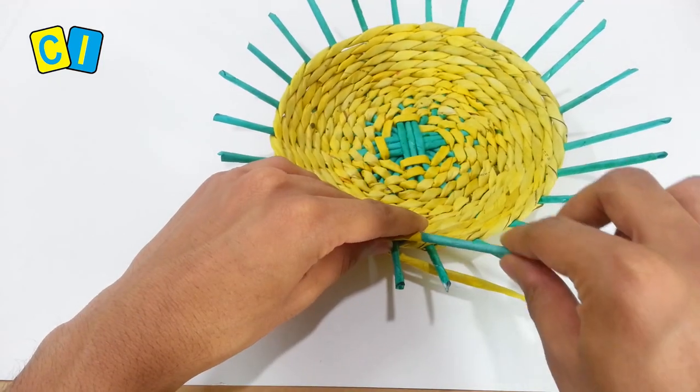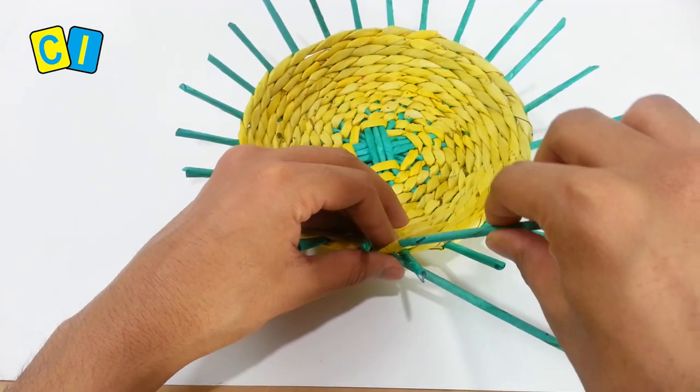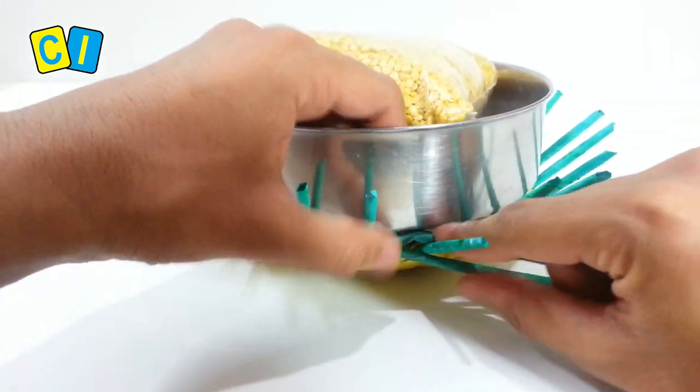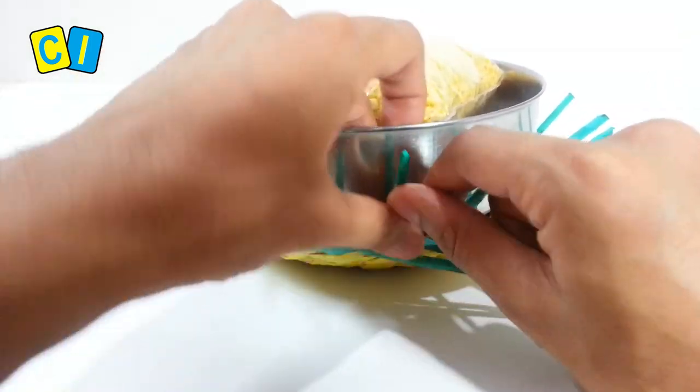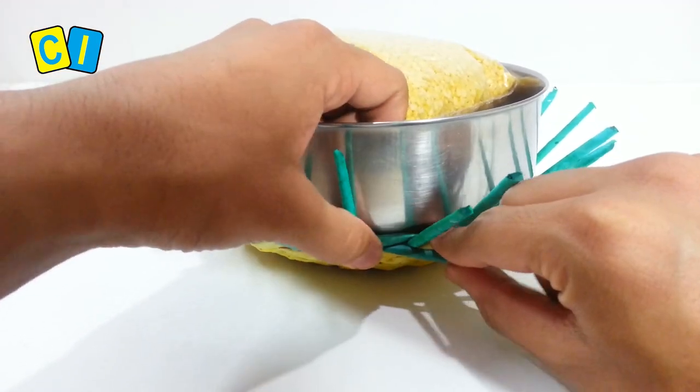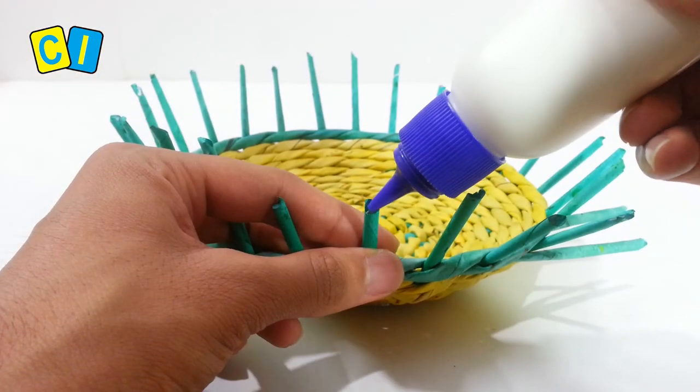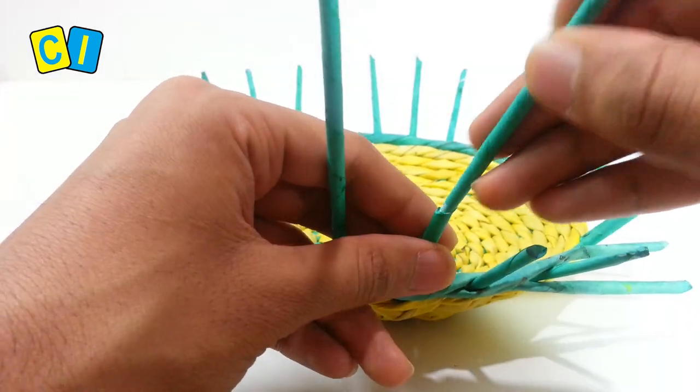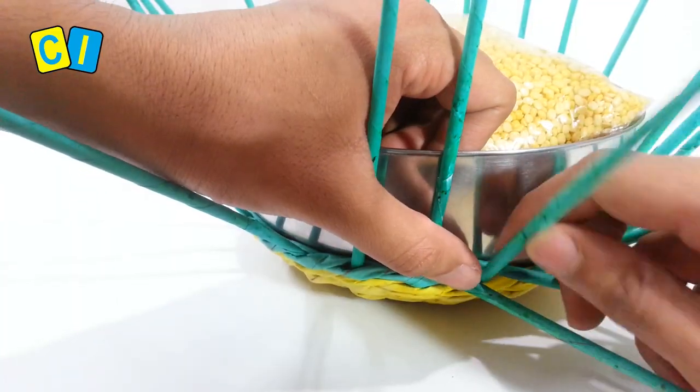Change the working tubes to green. Place the container, put some weight in it and continue weaving. Add a drop of glue and insert another tube. Place the container and continue weaving.